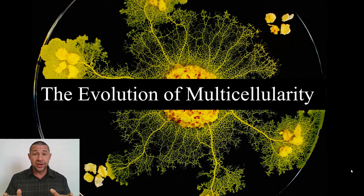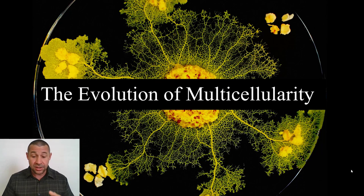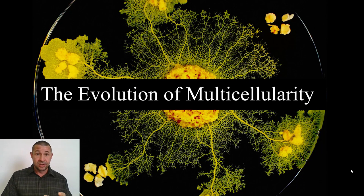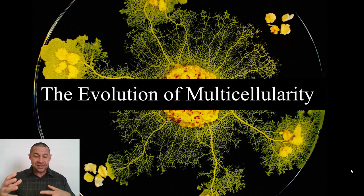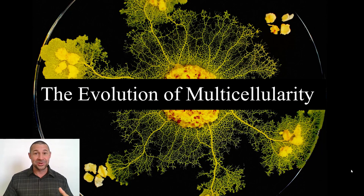This beautiful image that you see before you is a slime mold. Slime molds are composed of a multitude of eukaryotic cells. Slime molds used to be considered part of the kingdom fungi, but they've since been reclassified into the kingdom Protista. It's probably more appropriate to think about these guys as large numbers of amoebas that are working collectively as a single multicellular organism.